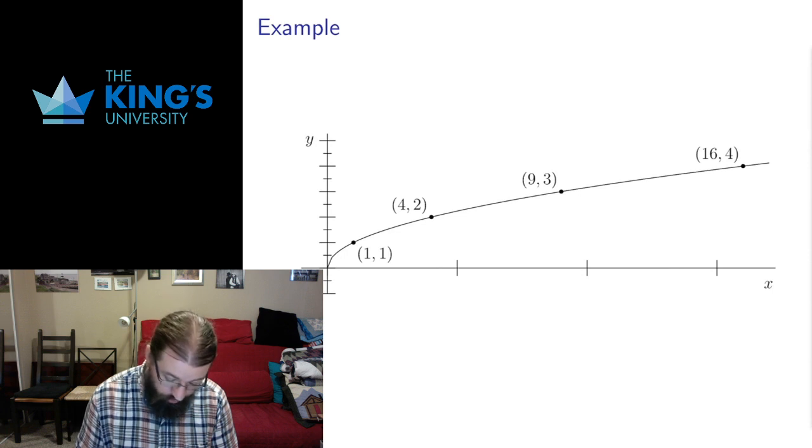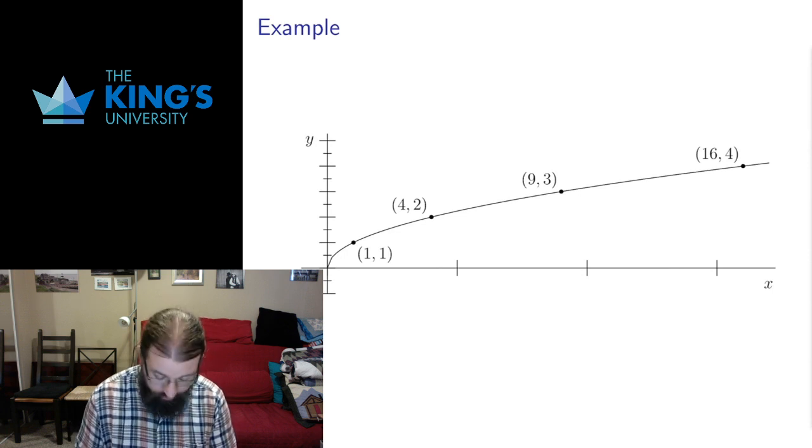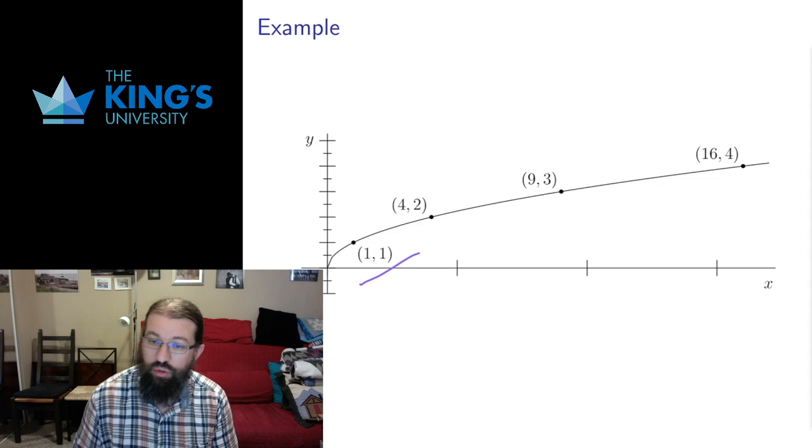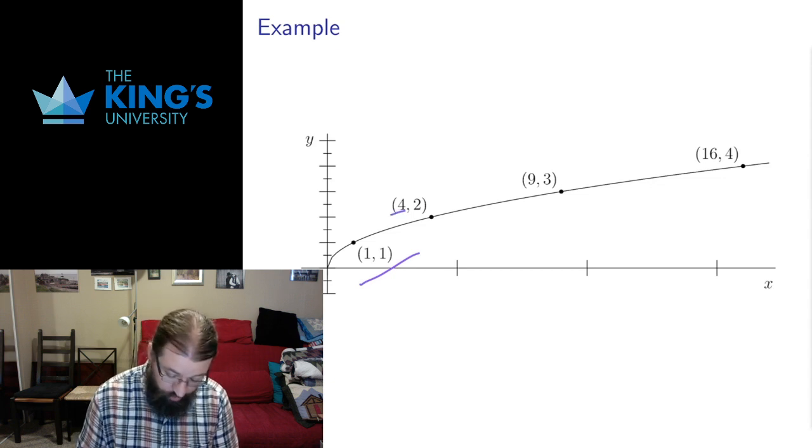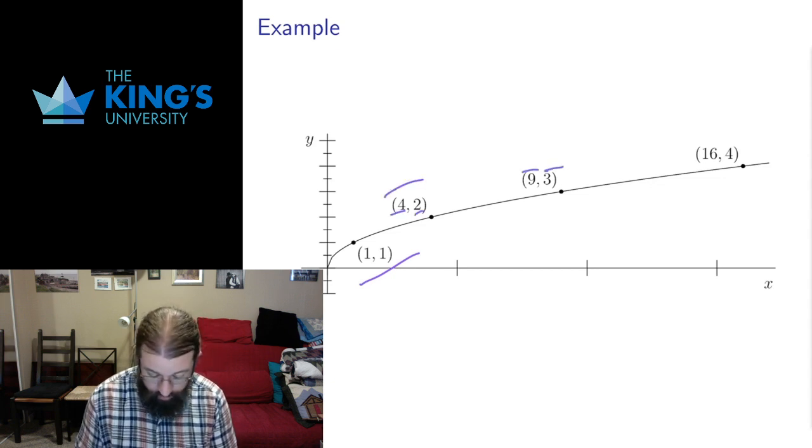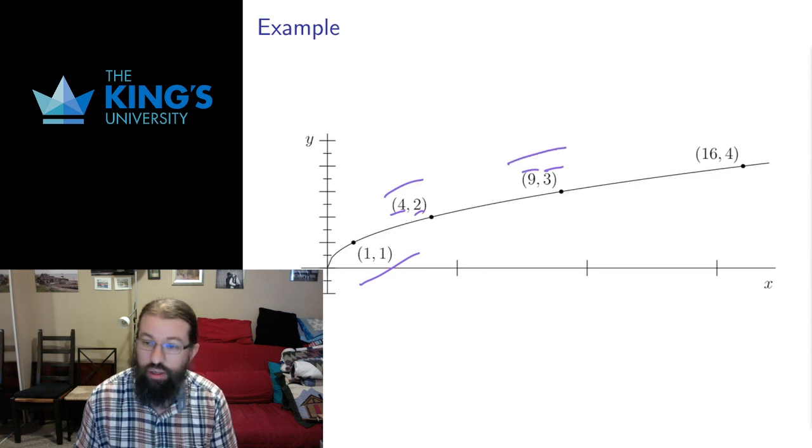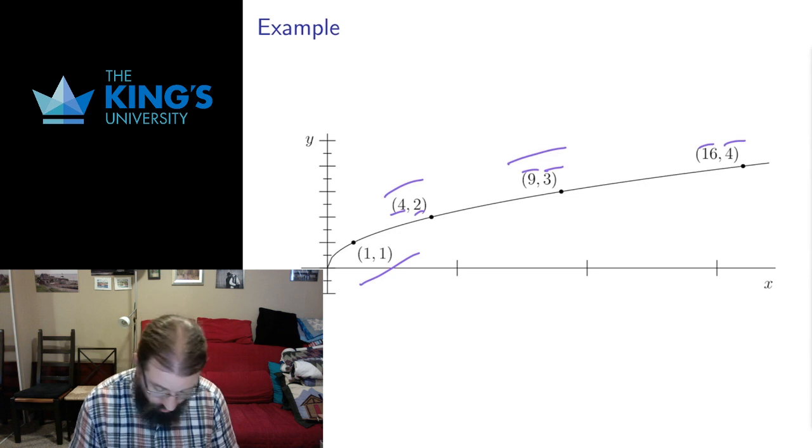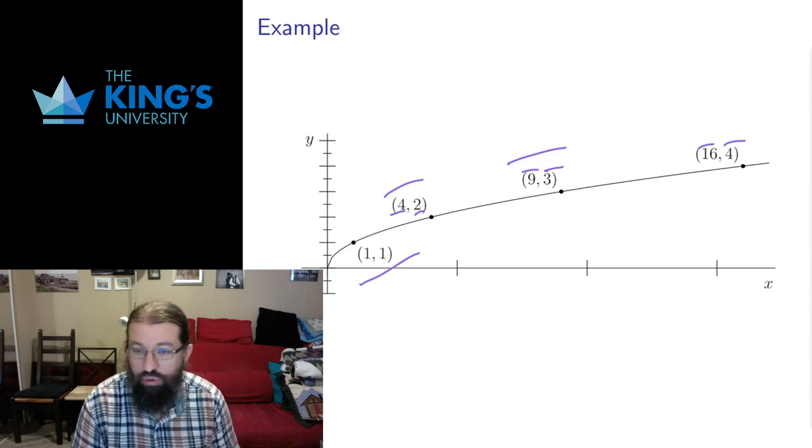So here are the four points, the three points I mentioned plus an extra one. Square root of 1 is 1, so input 1 works. Input output (4,2), square root of 4 is 2. Input output (9,3), square root of 9 is 3. Input output (16,4), square root of 16 is 4. And altogether I get the shape drawn here.